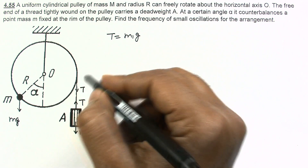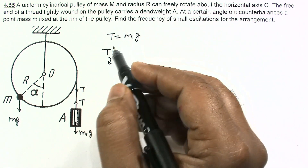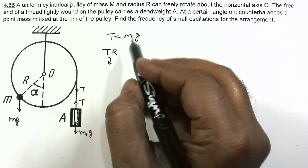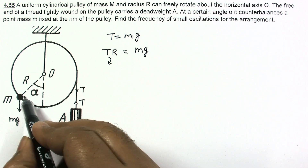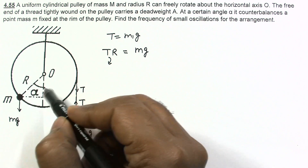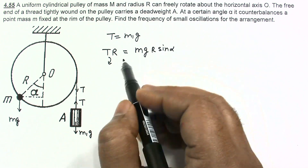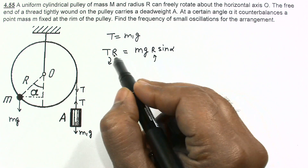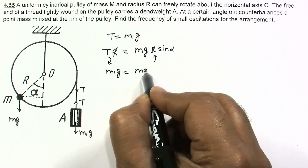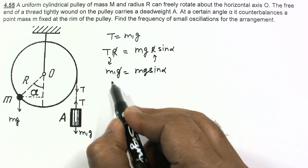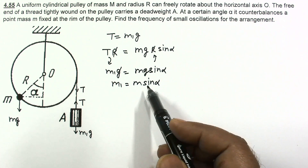Torque due to tension T is T·R in the clockwise direction. This must be balanced by the anticlockwise torque produced by Mg. The perpendicular distance on the line of action of Mg is R sin α, so the anticlockwise torque is Mg·R sin α. Setting these equal: T = Mg sin α, and since T = M1·G, we get M1 = M sin α.